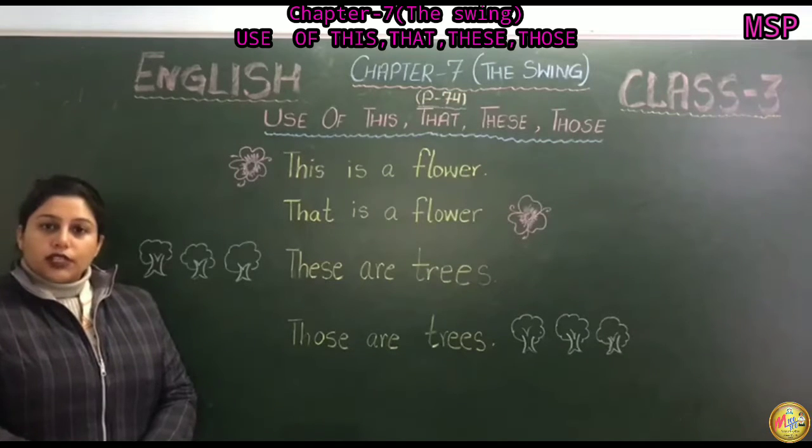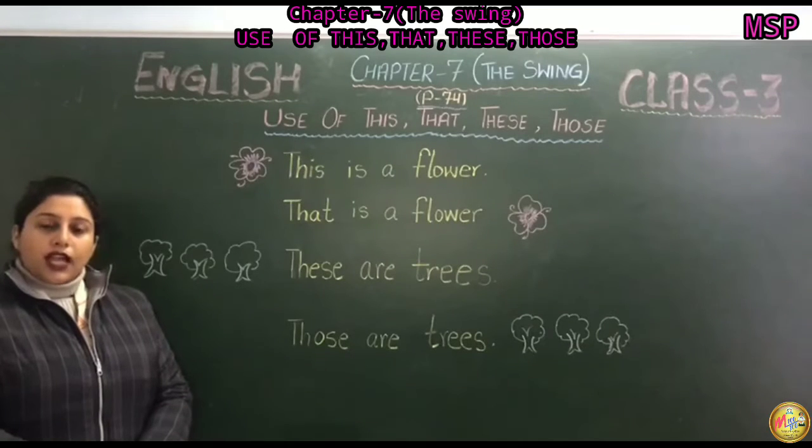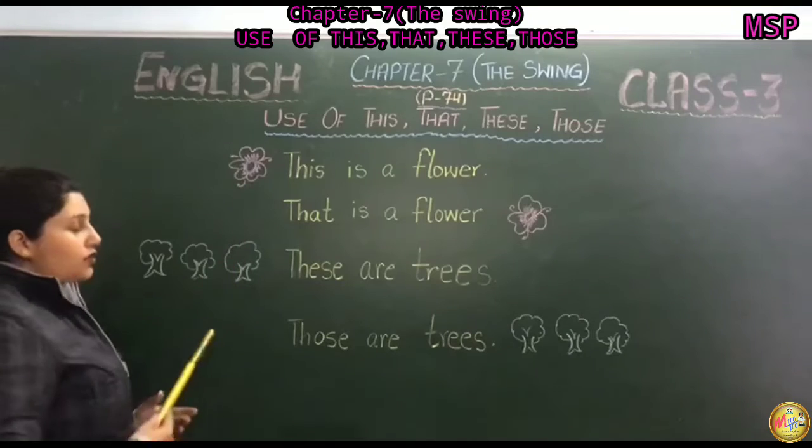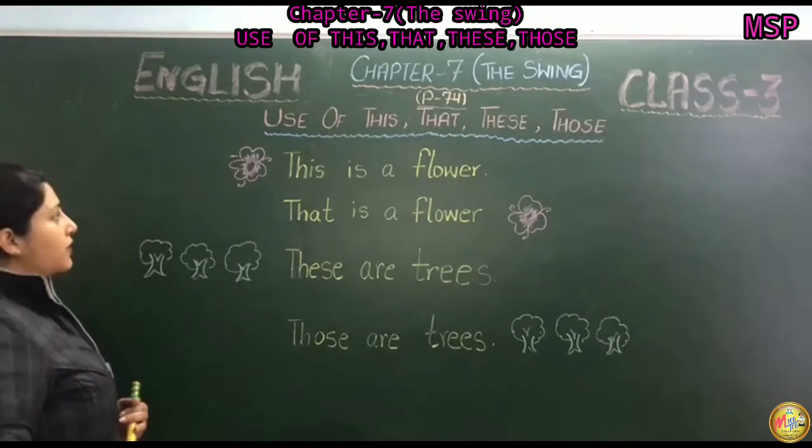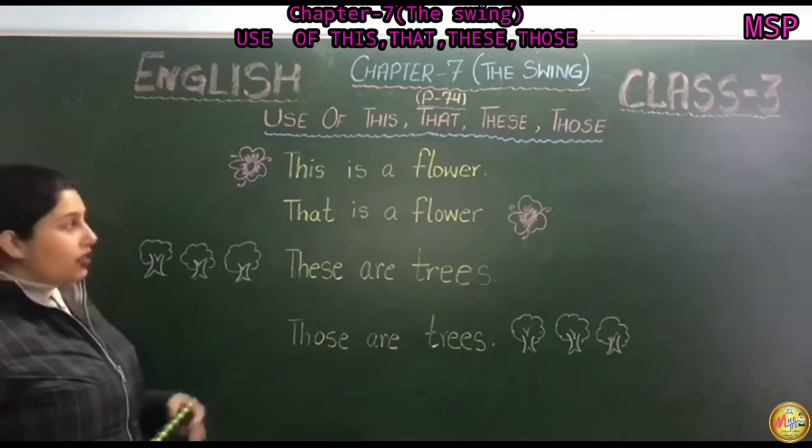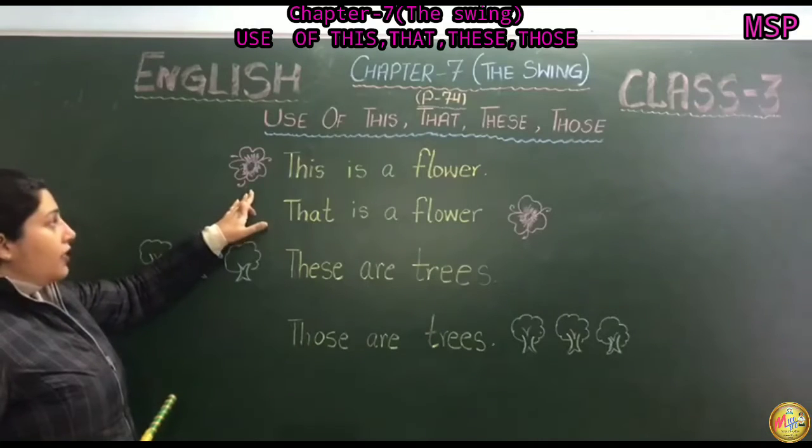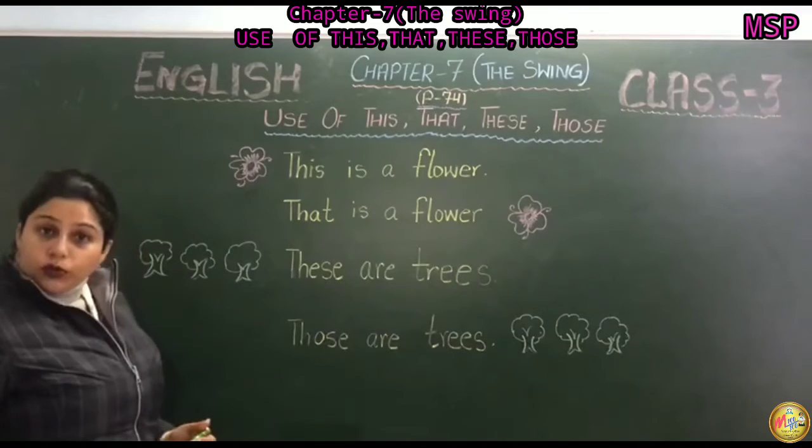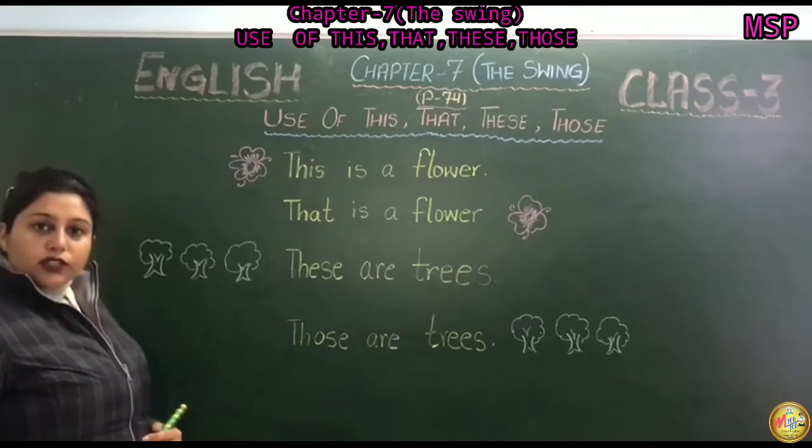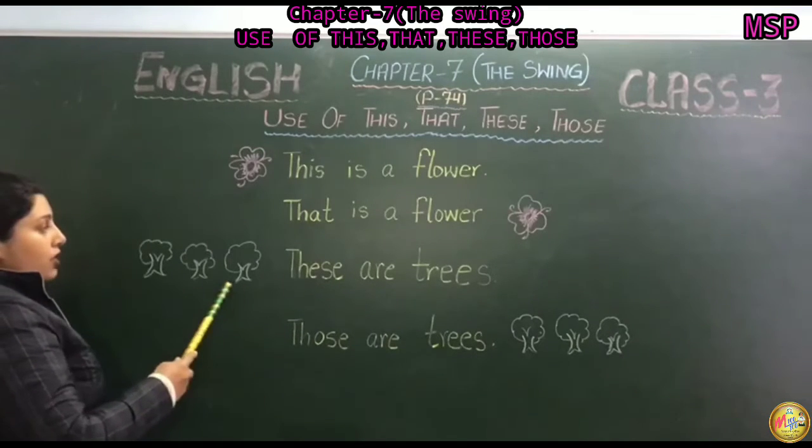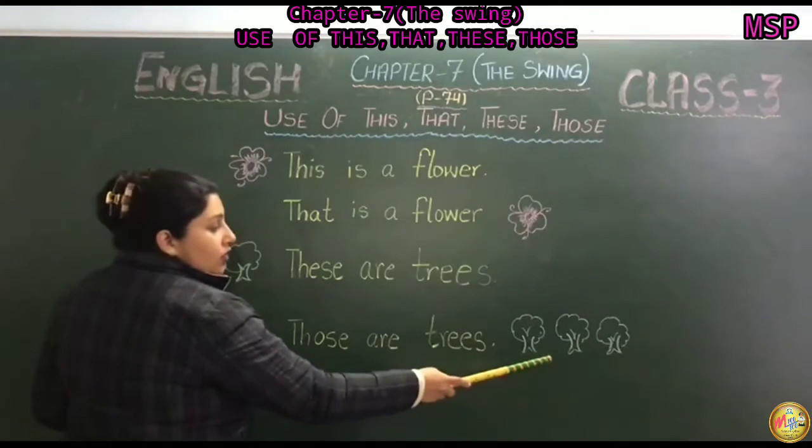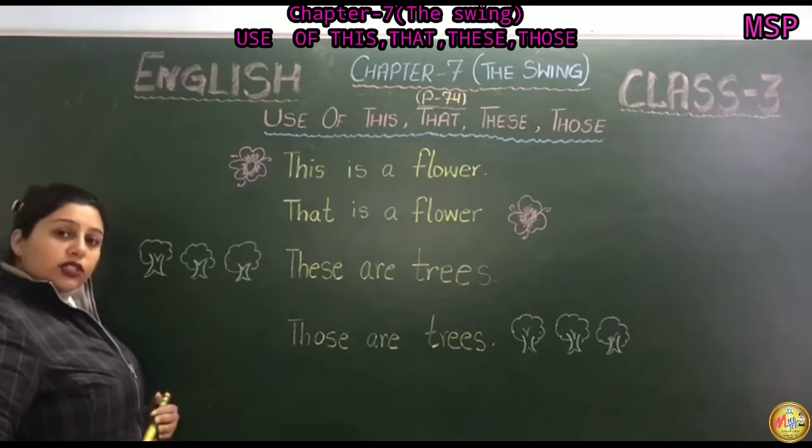Very good morning class third. Today our topic is use of this, that, these, those from chapter 7, The Swing, page number 74. Students, here you can see flower entries on the blackboard. First we'll see this is a flower.